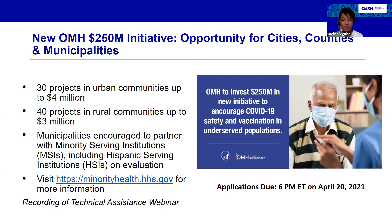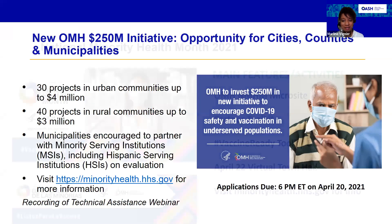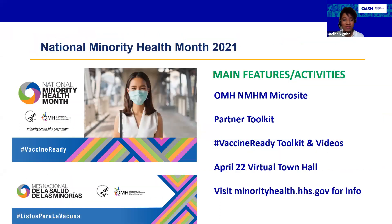Cities, counties, parishes, and other similar subdivisions may apply for funding. OMH expects to fund projects in urban and rural communities for two years. The goal is to provide racial and ethnic minority and underserved communities with information they need to stay safe and get vaccinated. Potential grantees are encouraged to partner with minority-serving institutions, including Hispanic-serving institutions, for the evaluation component. The application deadline is 6 p.m. Eastern Standard Time on April 20th, 2021. Please visit officeofminorityhealth.hhs.gov for more information.